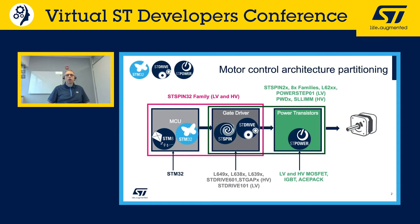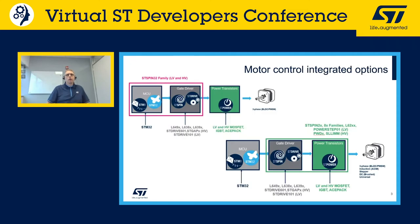There are two options for integrating the motor control system. We can integrate the MCU together with the gate driver while leaving the power stage discrete. The first option, called the ST SPIN family, is typically used where there is a portfolio of products with very similar MCU requirements but different output power requirements on the power stage.